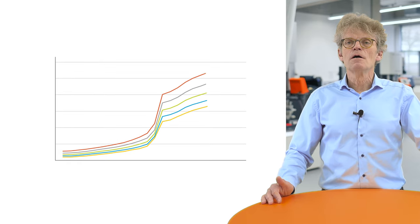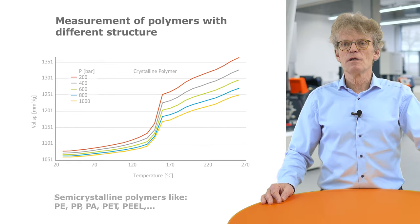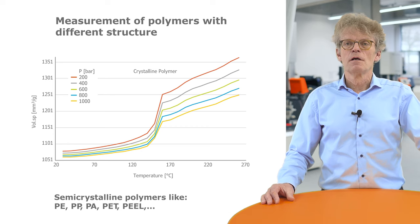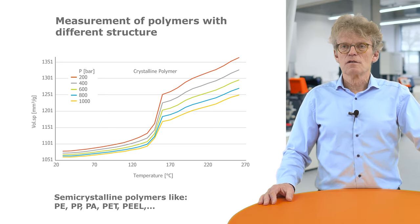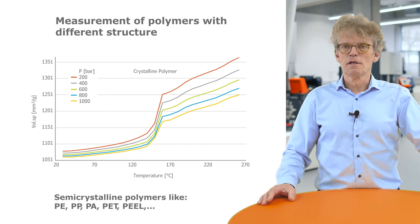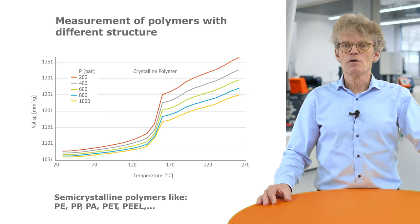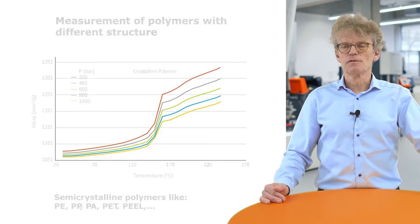We have different structures of polymers shown in PVT measurement. One type is semi-crystalline polymers like polyethylene, polypropylene, polyamide, polyester, and PEEK. Here we have a big transition from the melt phase, which is more or less linear, to the solid phase, also more or less linear, but in between we have a drastic change of specific volume due to the crystallization of the polymer.